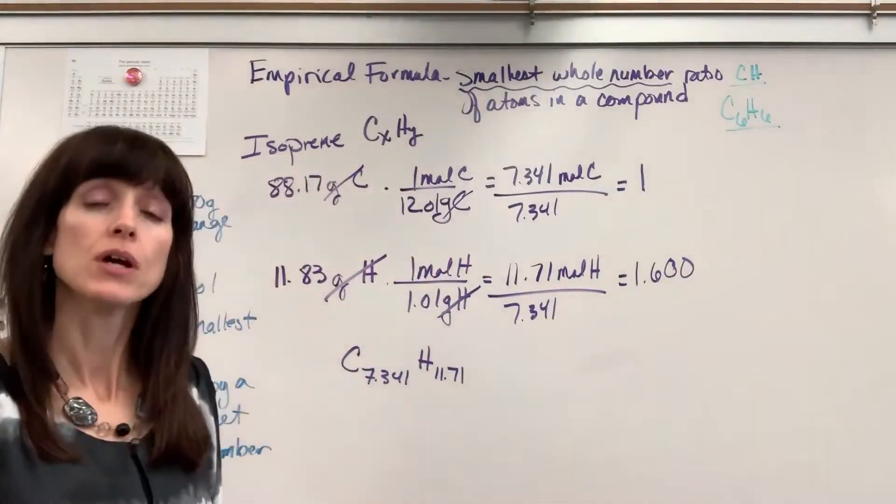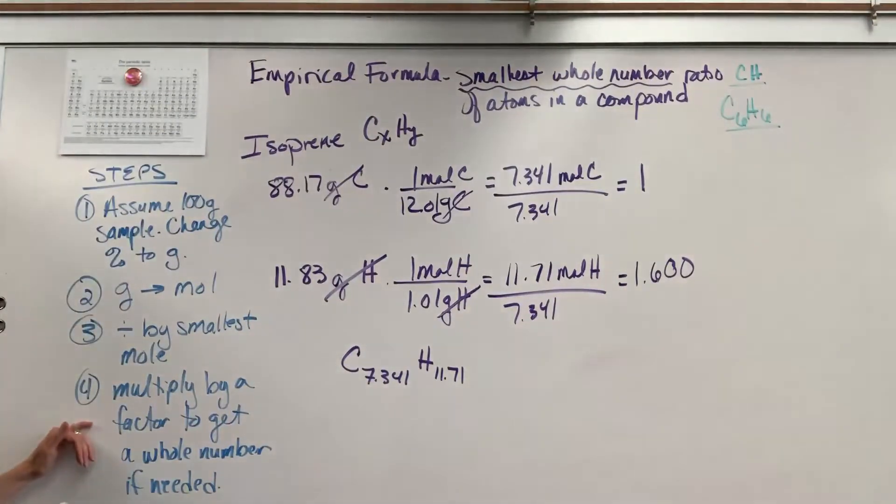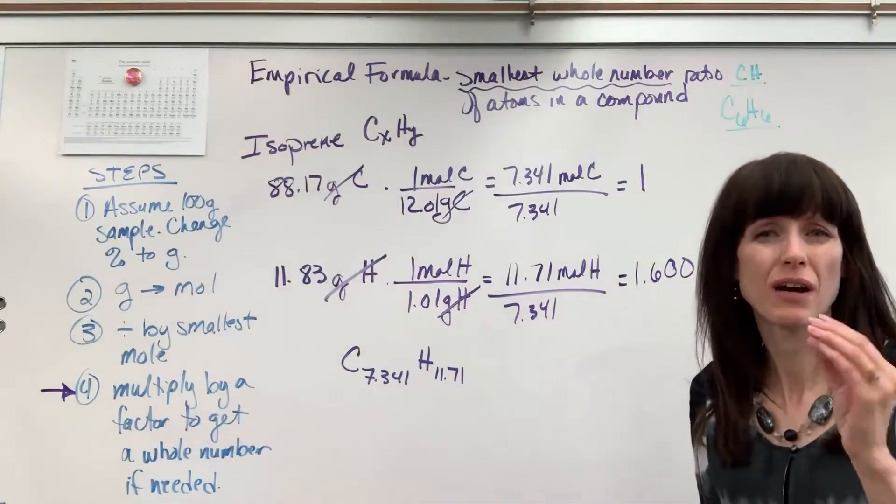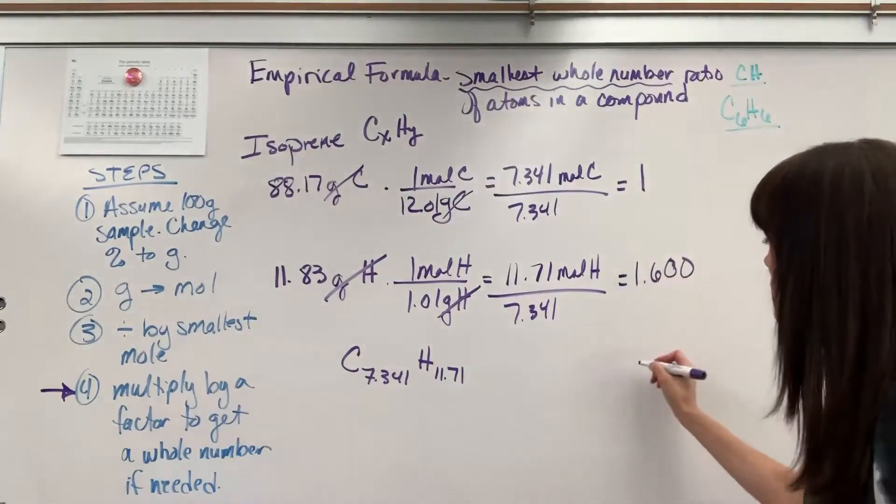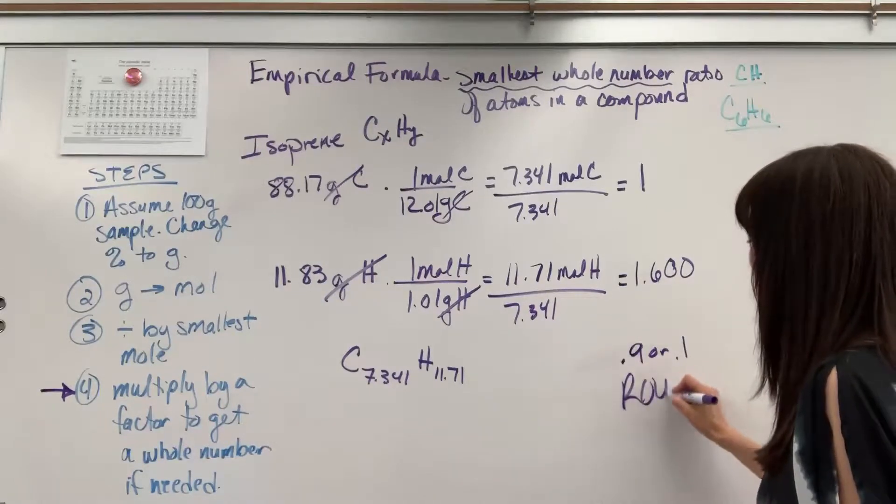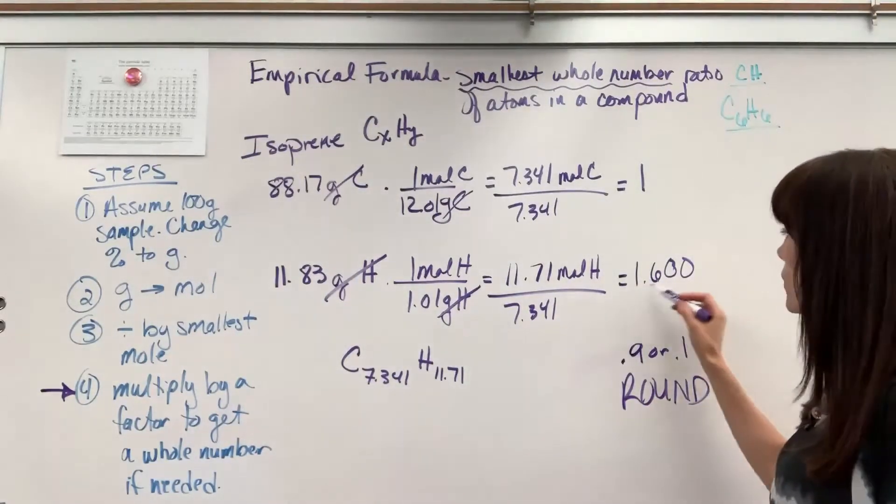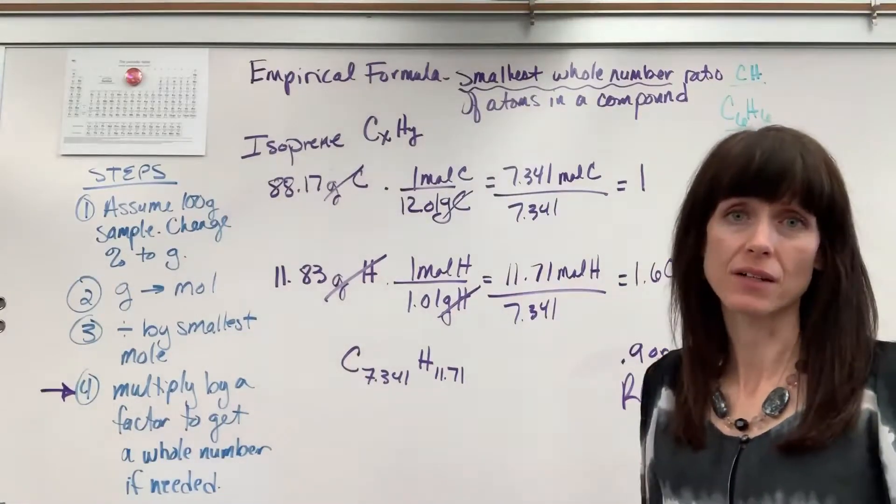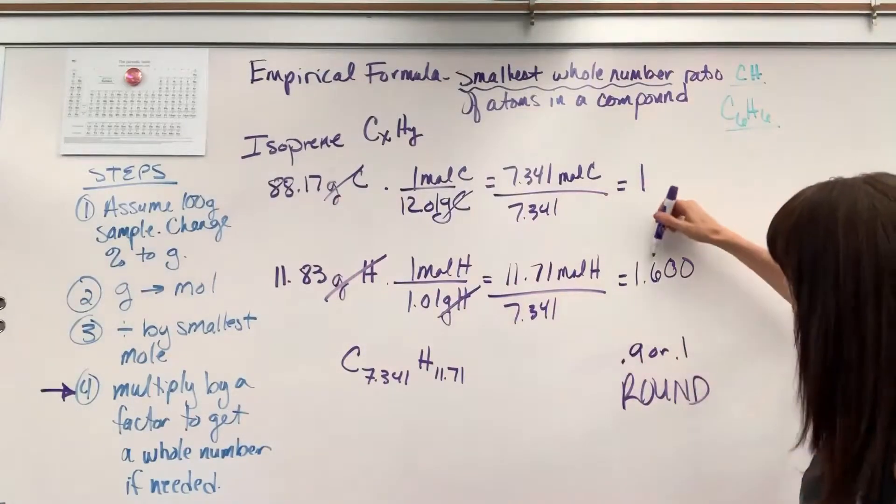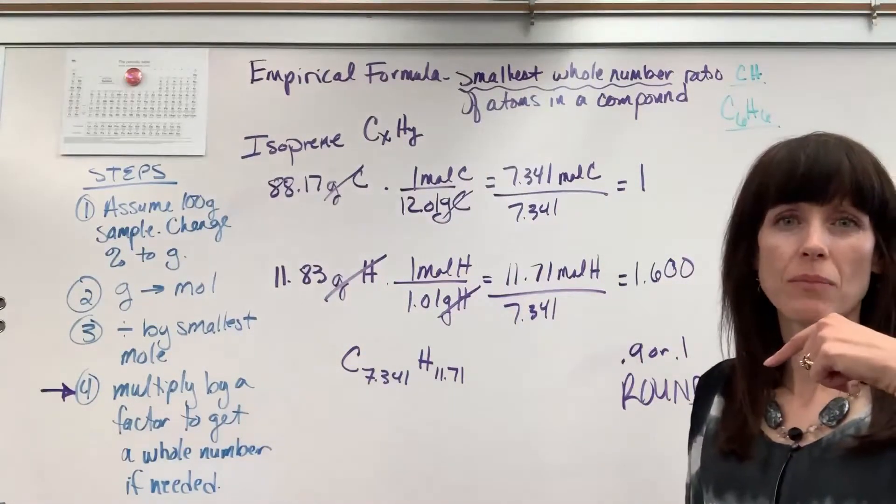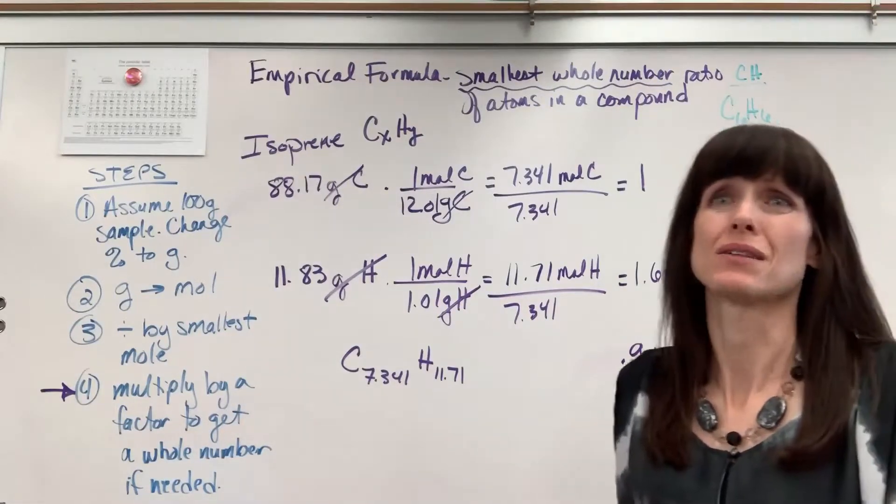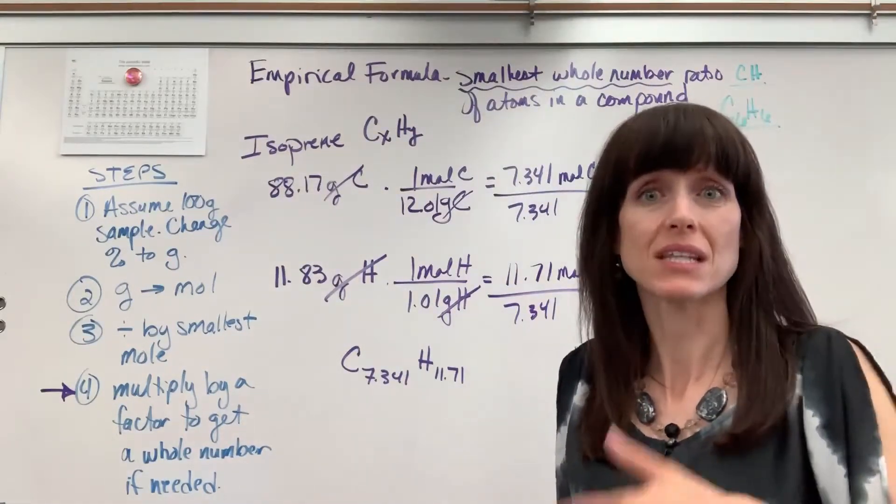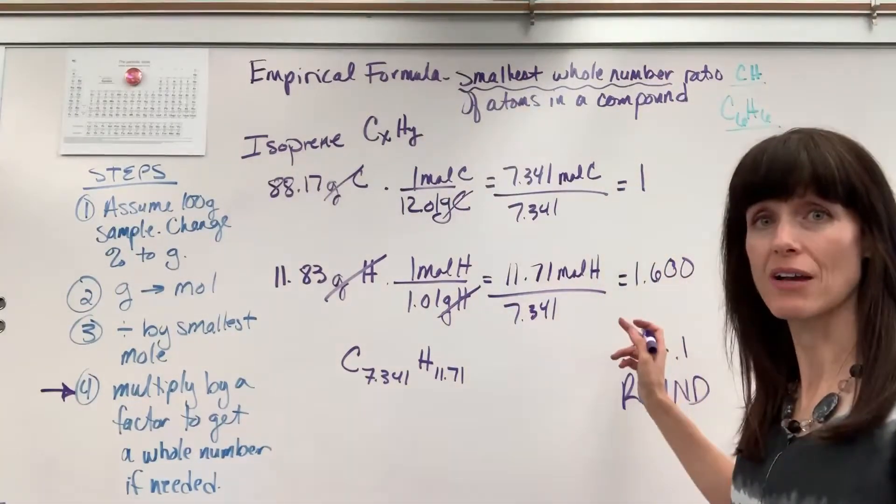I still have a fraction. So at this point we're going to do step four. Now you only do step four, multiply by a factor if you didn't get a whole number. And I do have a range on this. If you ever end in .9 or .1 you can round. If I had gotten 1.9 I would have rounded up to 2. If I had gotten 1.1 I would have rounded down to 1. If you get anything else you have to multiply by a factor to get to a whole number. So you just look at the tens place and you think what number do I have to multiply by to get to a whole number. So I'm thinking 6. What do I have to multiply 6 by to get it to a 10 a nice even zero like a tens place. I have to multiply by 5. 6 times 5 is 30. I've got to multiply .6 by 5. That gives me 3.